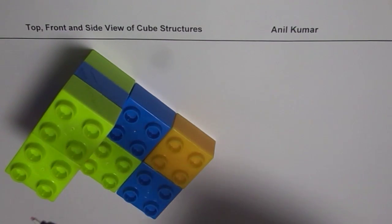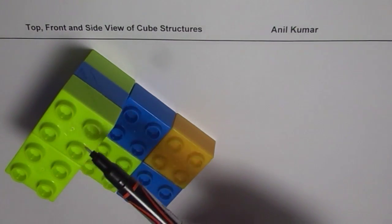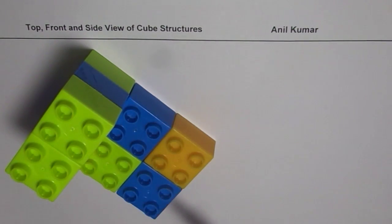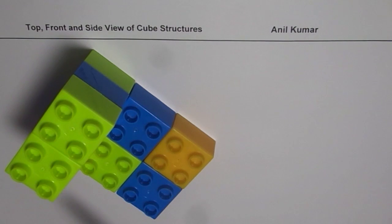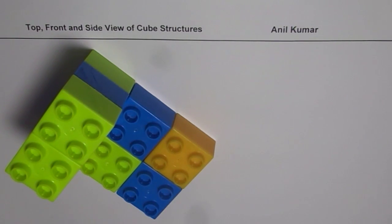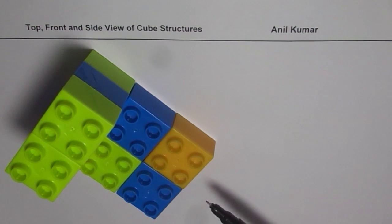The top view is when you look from the top. What do you see? You see a rectangular block where you have six squares — that is the top view. The front view is when you look from the side.